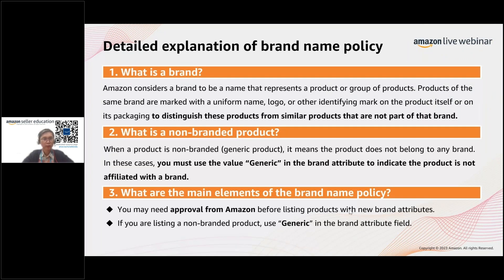If you have a brand, it's good to enroll in Amazon Brand Registry. First, let's go through the Amazon brand name policy. Amazon considers a brand to be a name that represents a product or group of products with a uniform name, logo, etc. — even on its packaging. Non-branded products are called generic products. During the listing process, if you select that your product has no brand, it will automatically be tagged as a generic product. Having a brand helps build more confidence in your product.